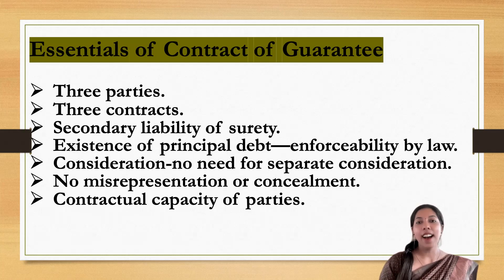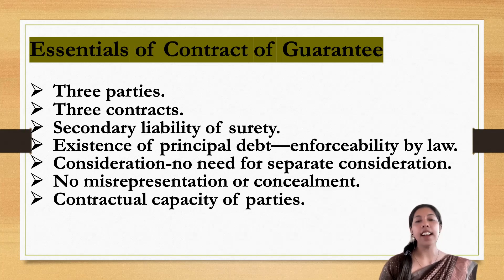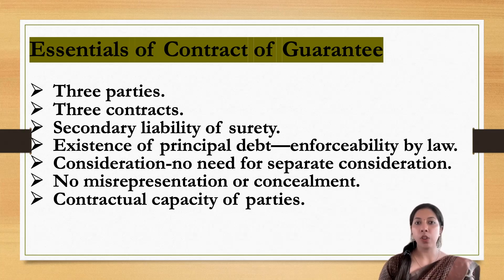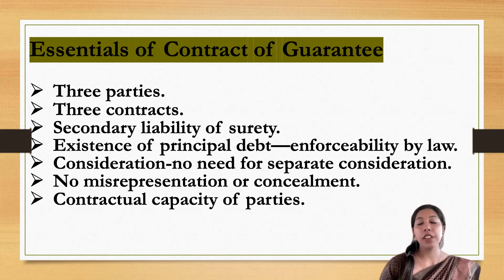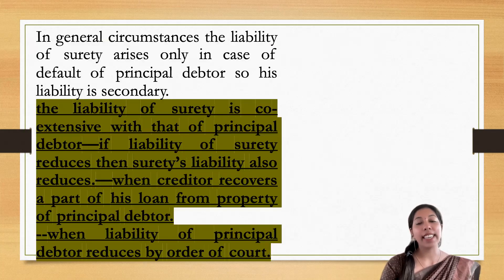The essentials of a Contract of Guarantee are: first, there are mainly three parties — principal debtor, creditor, and surety. Second, there are three separate contracts between these parties. Third, there is the secondary liability of the surety under Section 128, which says the surety's liability is co-extensive with that of the principal debtor. Fourth, there must be an existence of principal debt. Fifth, there is no need for separate consideration. Sixth, there should be no concealment or misrepresentation. Seventh, all parties must have contractual capacity.